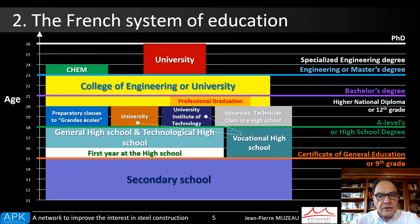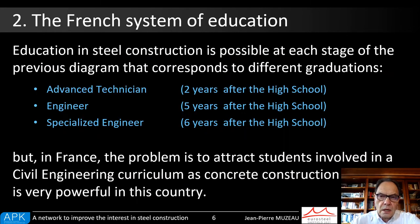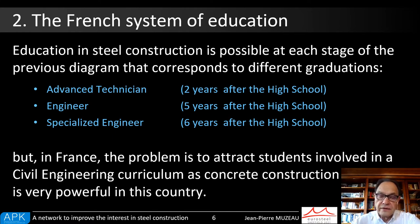This diagram shows most of the steps to be graduated in France. It is slightly different from the Bologna scheme, but I will not spend time about that, as details are provided in the paper. Learning steel construction is possible at each stage of the previous diagram, all of them being associated to different qualifications and diplomas. But how to interest students when, as in France, concrete construction is so attractive?